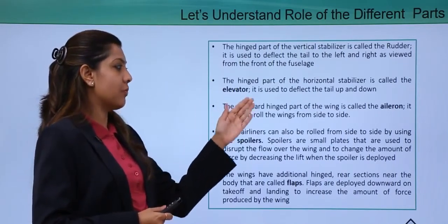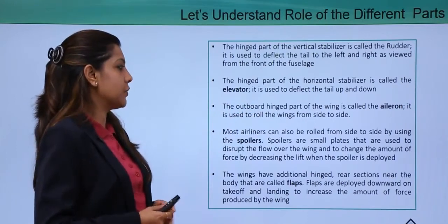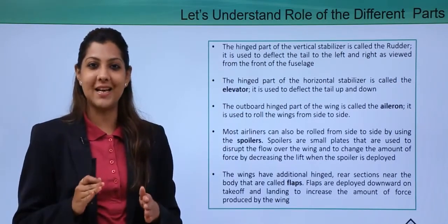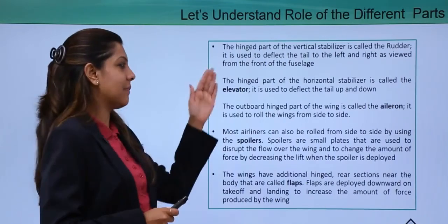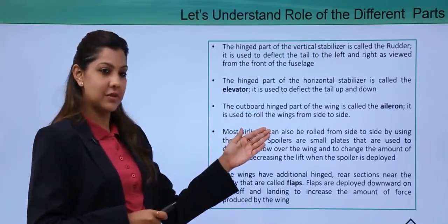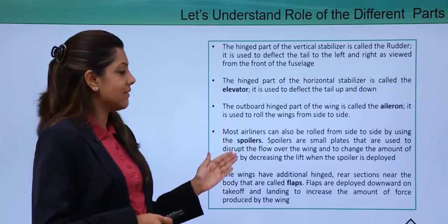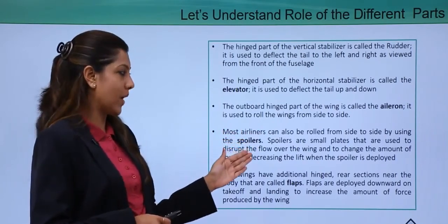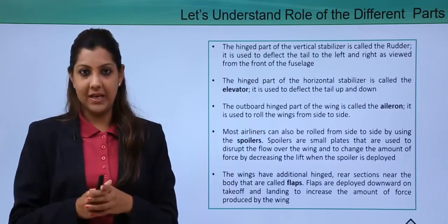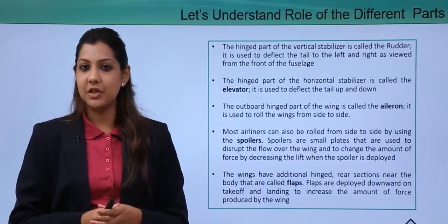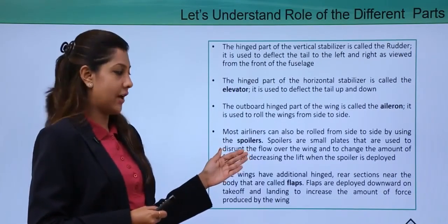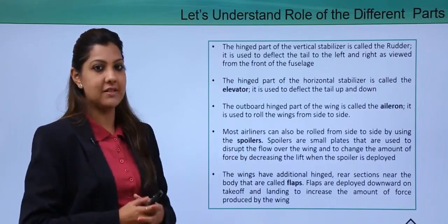The outboard hinged part of the wing is the ailerons, used to roll the wings from side to side — the side-to-side motion called yawing. Airlines can also be rolled using spoilers. Spoilers are small plates that disrupt the flow over the wing and change the lift force. When deployed by the cockpit crew, spoilers help change the aircraft's speed and roll as needed.